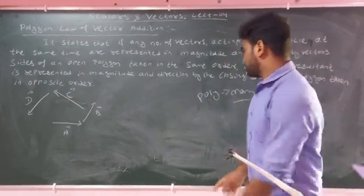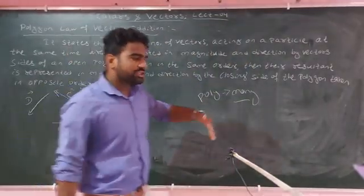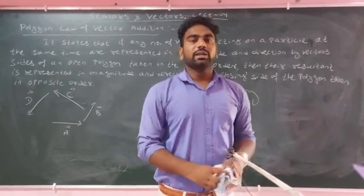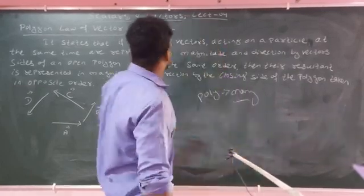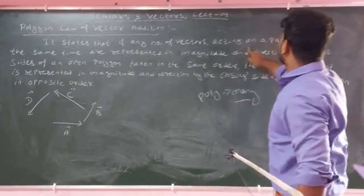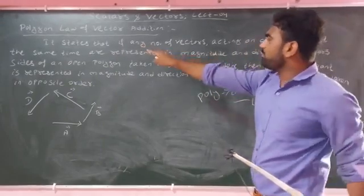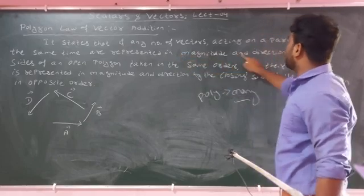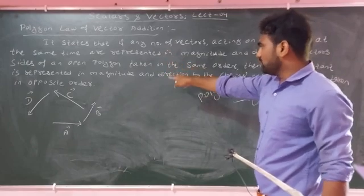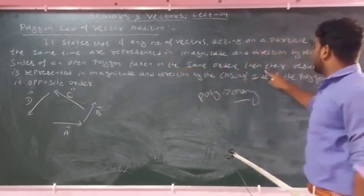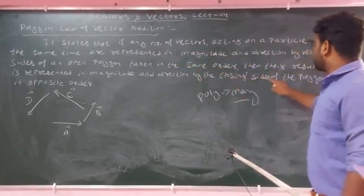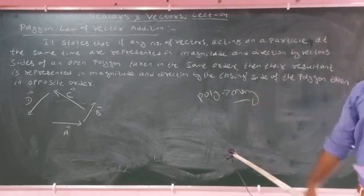So what happens with polygon addition? There are many vectors — 3, 4, 5, 6, 7, 8 vectors. It states that if any number of vectors acting on a particle at the same time are represented in magnitude and direction by the sides of an open polygon taken in the same order, then their resultant is represented in magnitude and direction by the closing side of the polygon taken in the opposite order.